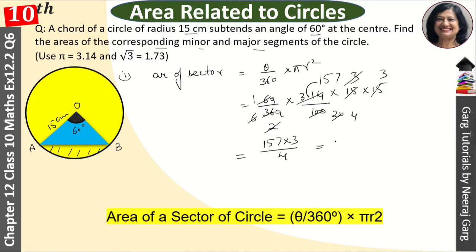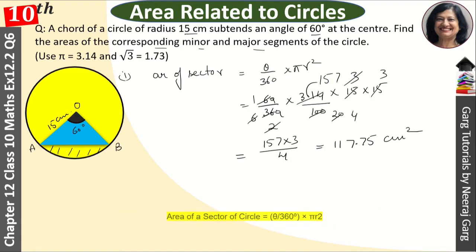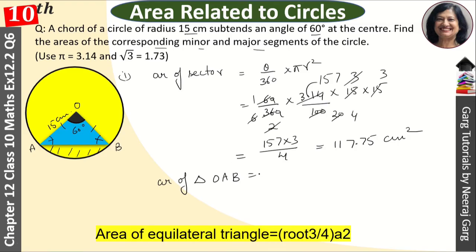After, we have to remove area of triangle OAB. What will be the formula? Root 3 upon 4 a square. One is our r, so root 3 upon 4 r square.